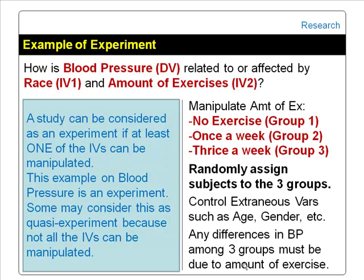A study can be considered an experiment if at least one of the independent variables can be manipulated. The blood pressure example can be considered an experiment because amount of exercise can be manipulated. Some may consider this a quasi-experiment because not all independent variables can be manipulated.